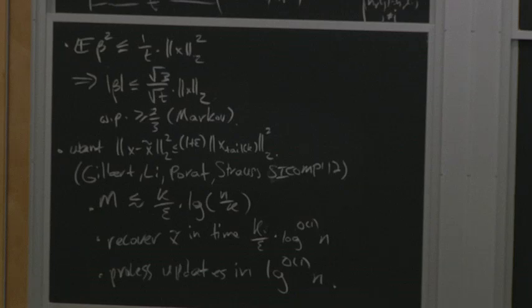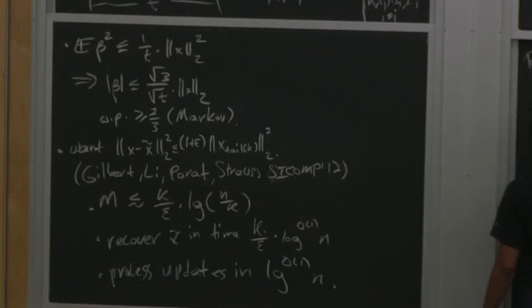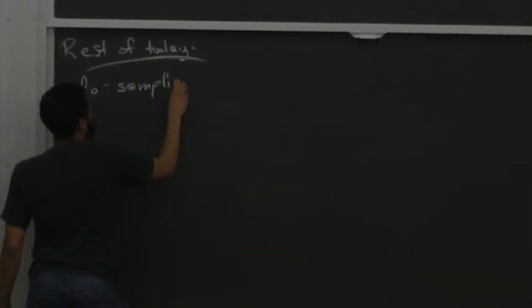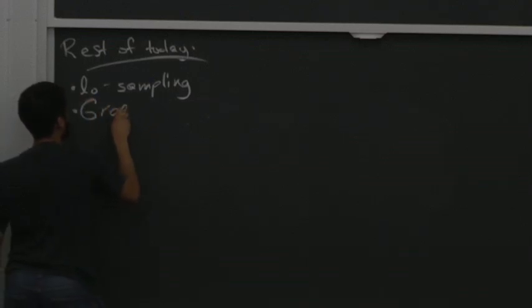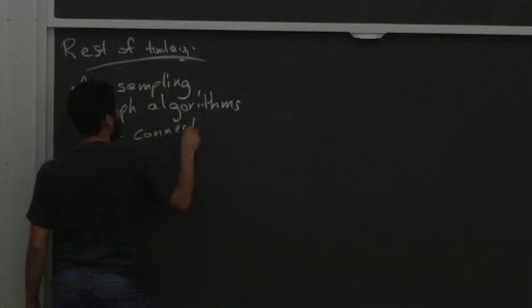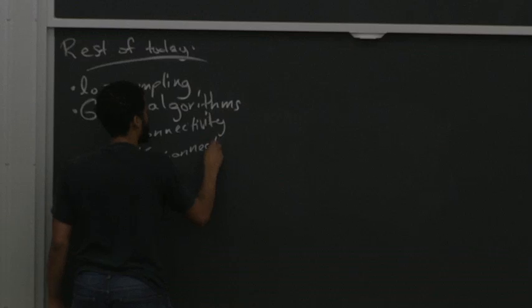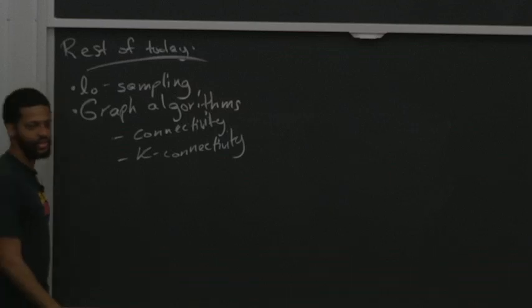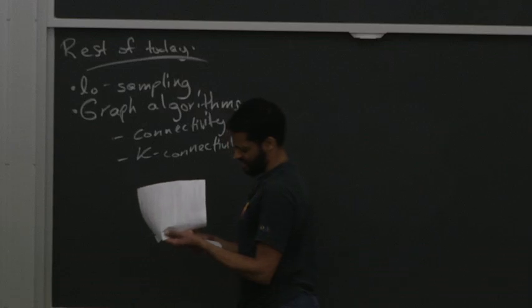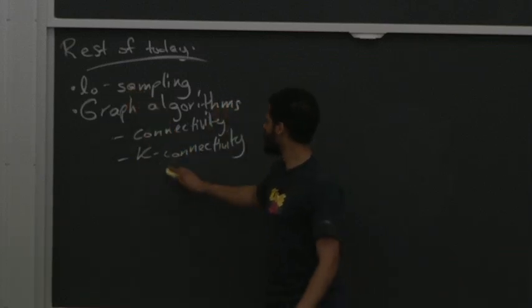For the rest of today, I'll talk about L0 sampling, which is related to graph algorithms — for example, connectivity, finding all connected components of a graph, and k-connectivity. I'll cover the first two fully in class, and then mention other things like min cut, vertex connectivity, and vertex cover.